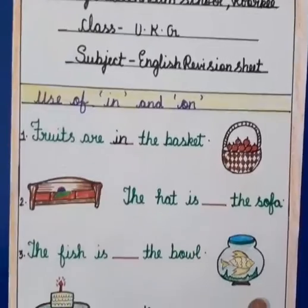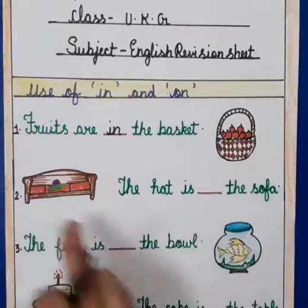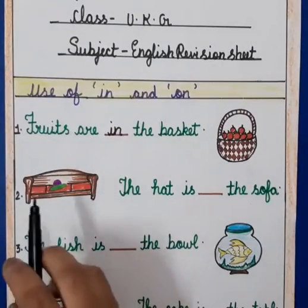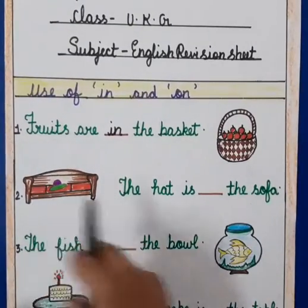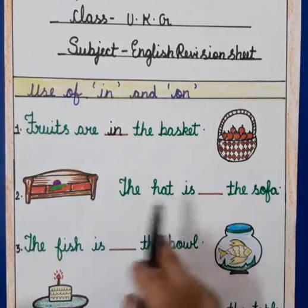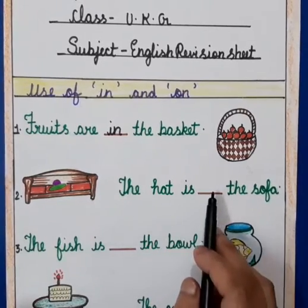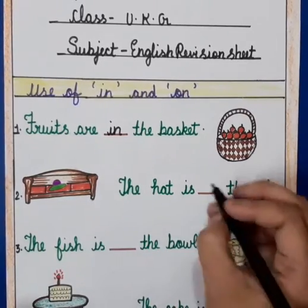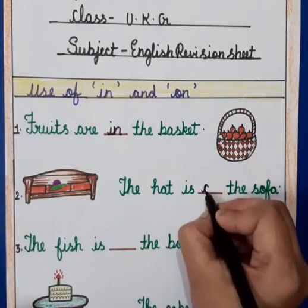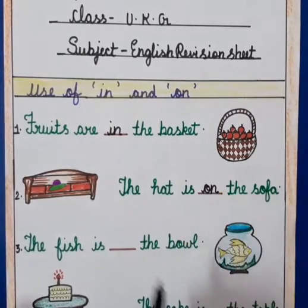Now the next sentence is: as you can see a sofa and a hat. The sentence is 'The hat is on the sofa.' So we will write 'O' and 'on' here.